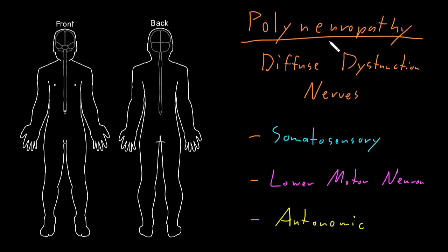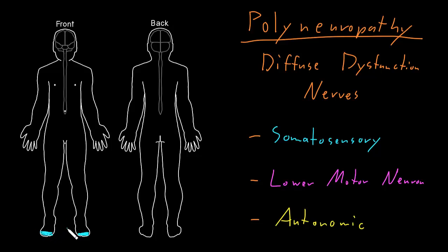There can be different patterns of polyneuropathy in terms of which abnormalities appear first or are the worst, and which parts of the body are most affected. But probably the most common polyneuropathy syndrome starts with somatosensory abnormalities of the toes of both feet. Patients will often come in complaining of numbness of the toes or the entirety of both feet, and they may also have pain in that area, since any abnormality of the somatosensory pathways may produce pain as well as other somatosensory symptoms.